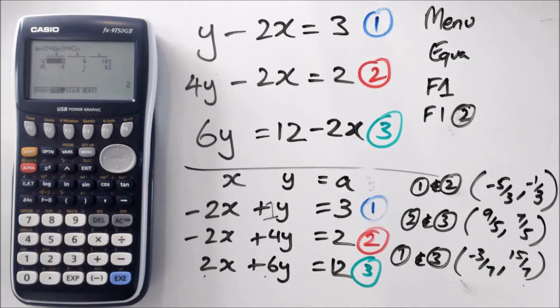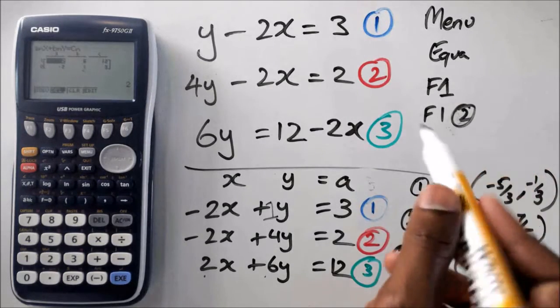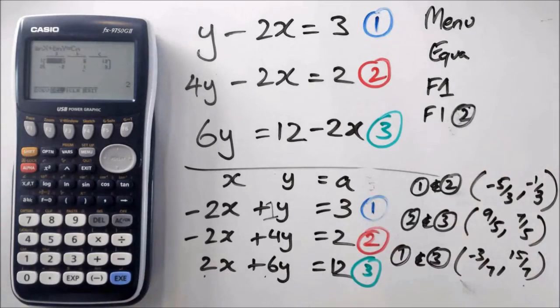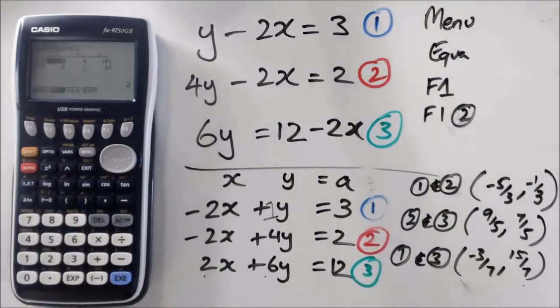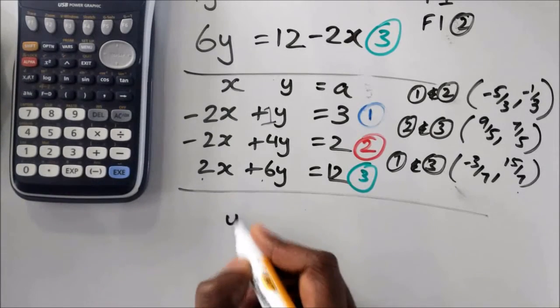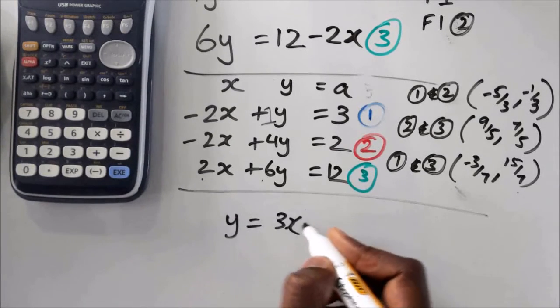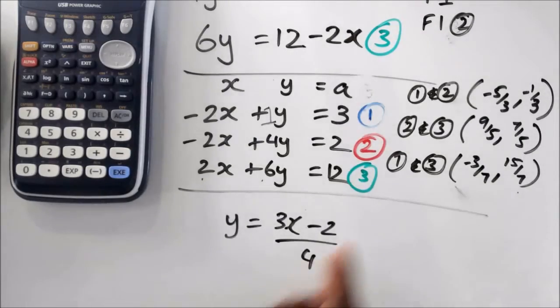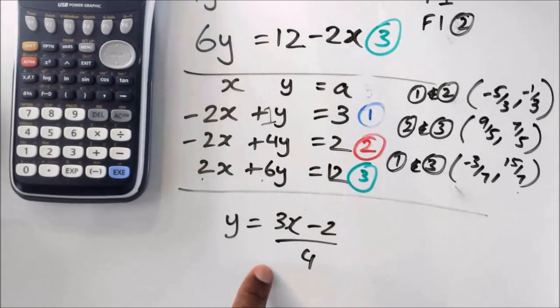If you have a fraction, like say if you have something like y equals 3x minus 2 over 4, to bring it into that format, you've got to rearrange everything.